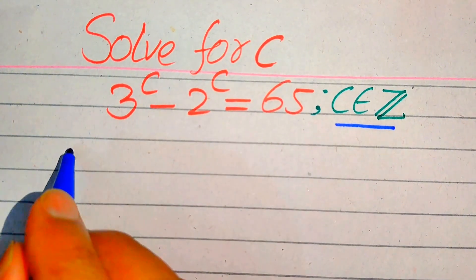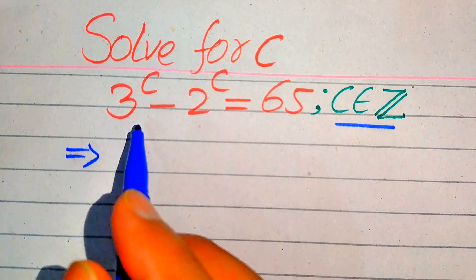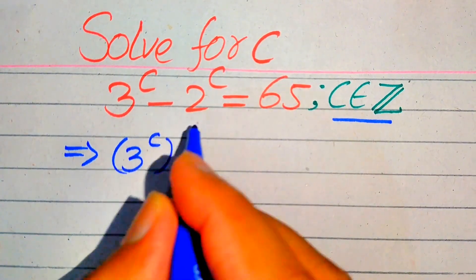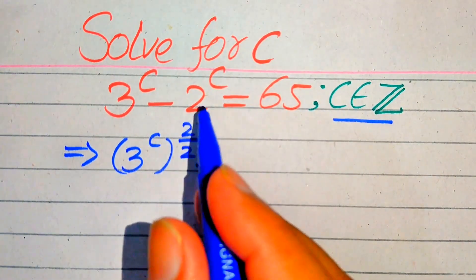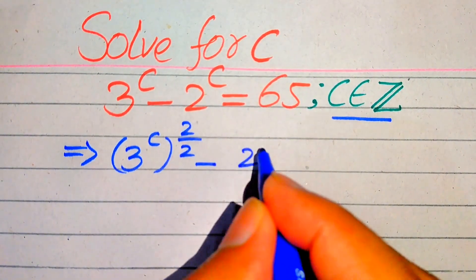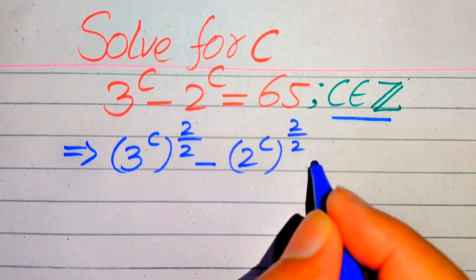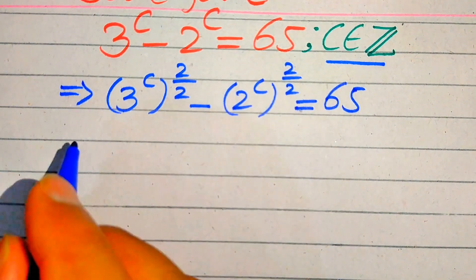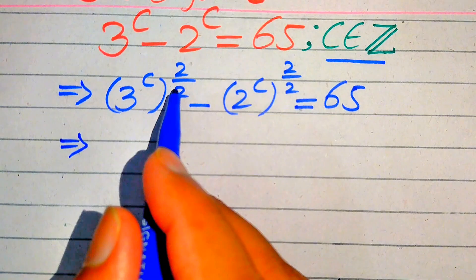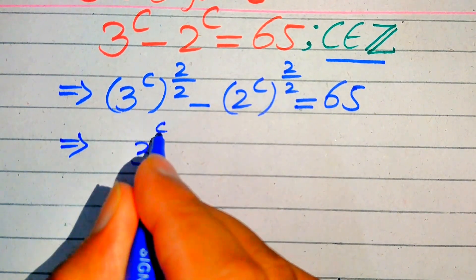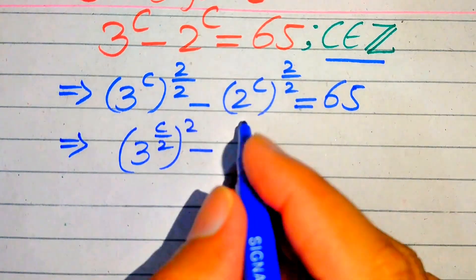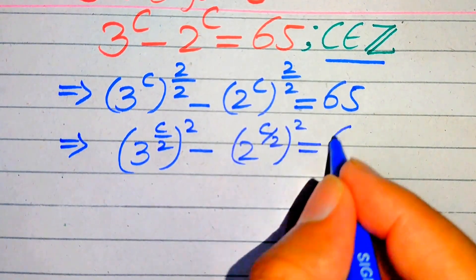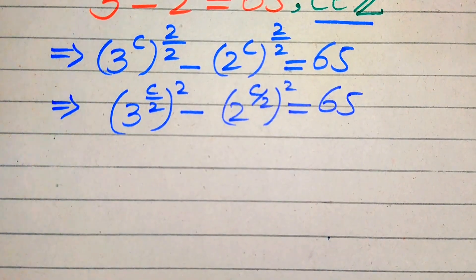The very first step we are going to do is multiply and divide the exponent of both terms by 2. So it will be written as 3 to the power of c with exponent 2 over 2, minus 2 to the power of c with exponent 2 over 2, equals 65. Using the exponent law, we move 1 over 2 inside, giving us 3 to the power of c over 2, whole squared, minus 2 to the power of c over 2, whole squared, equals 65.